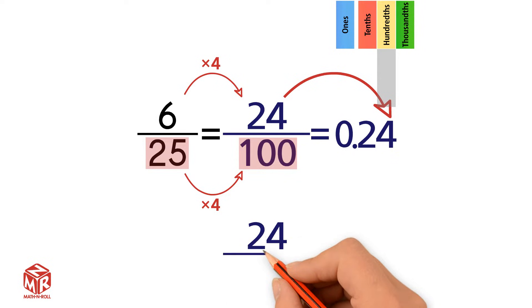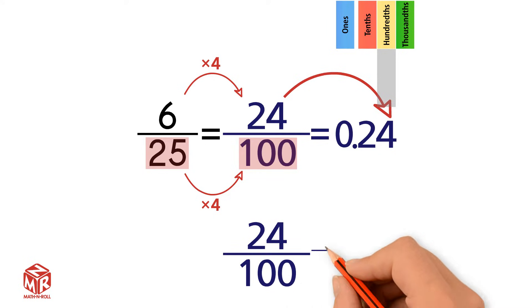We can also use the other method to convert 24 hundredths into a decimal. We rewrite the 24, and we check how many zeros are in the denominator. The denominator has two zeros, so we move the decimal point to the left two spaces.